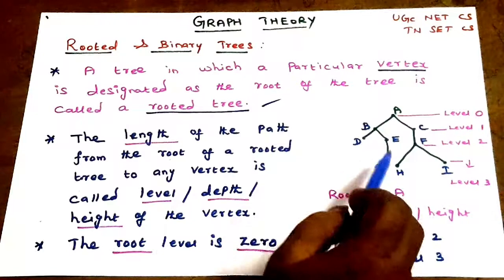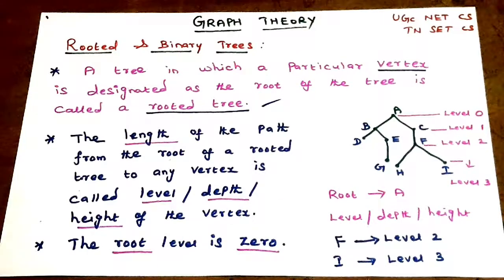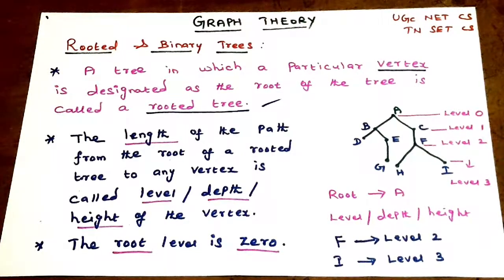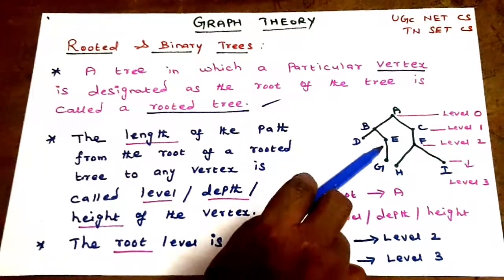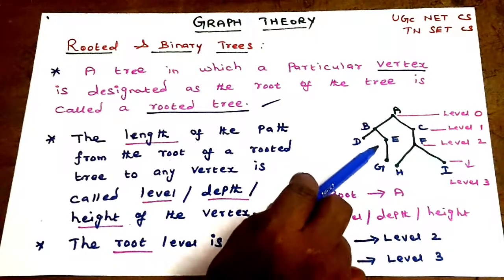Level 1, level 2, level 3. The depth and height of a vertex are also measured from the root. Depth 1, depth 2. Height 1, height 2.